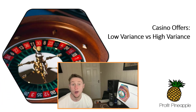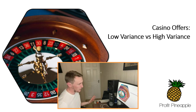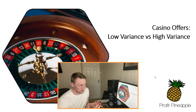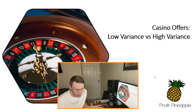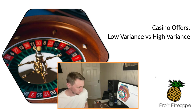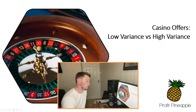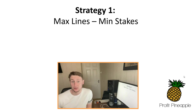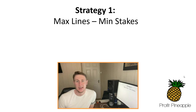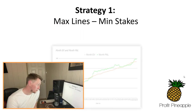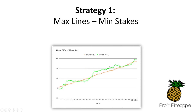Casino offers - low variance versus high variance - it's a really good question that gets asked by a lot of people when they first start doing casino offers. Should they go for the low variance strategy where they're staking really small and it takes quite a long time but it's pretty efficient, or should they go for the high variance strategy which takes next to no time but is highly variable and not really efficient in the short term? Strategy one is the max lines, min stakes low variance strategy. On your profit and loss graph, you'd expect to see the orange EV line and green profit and loss line working closely in tandem.